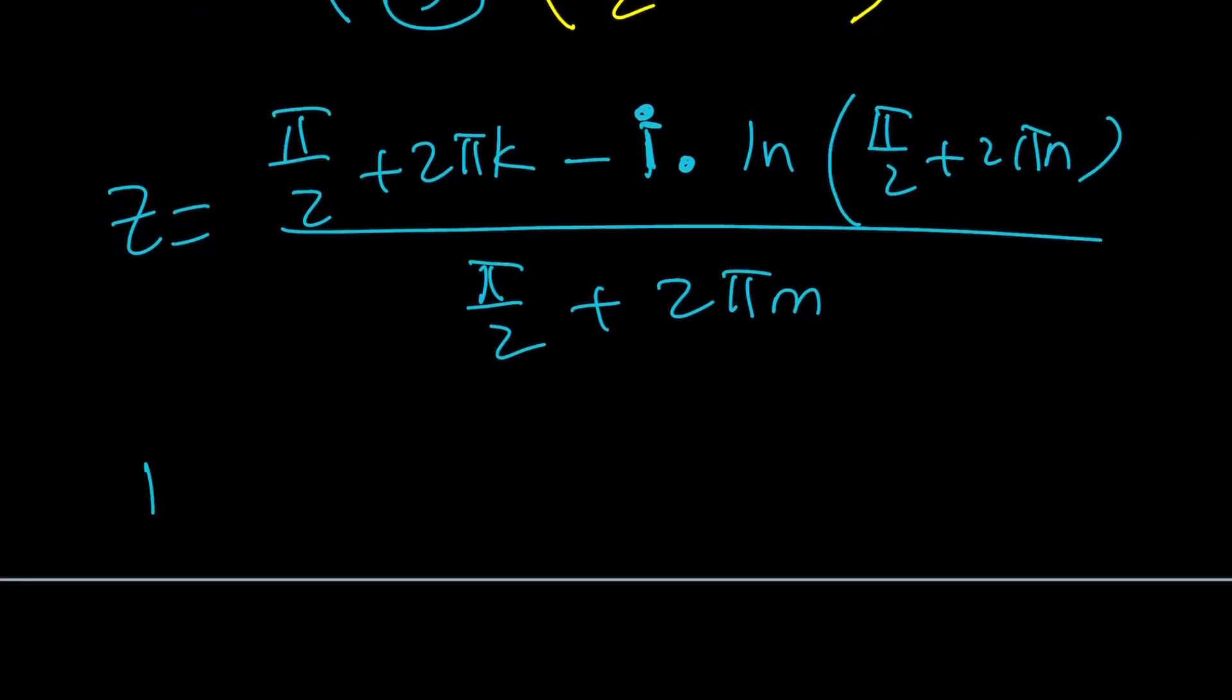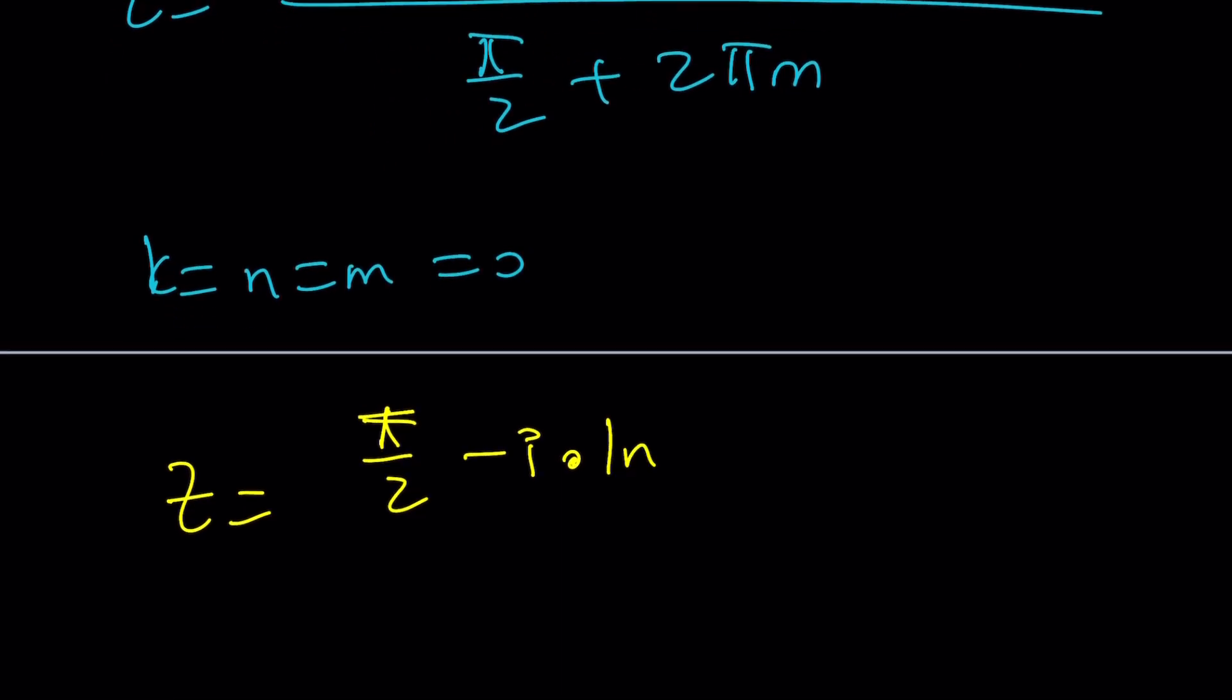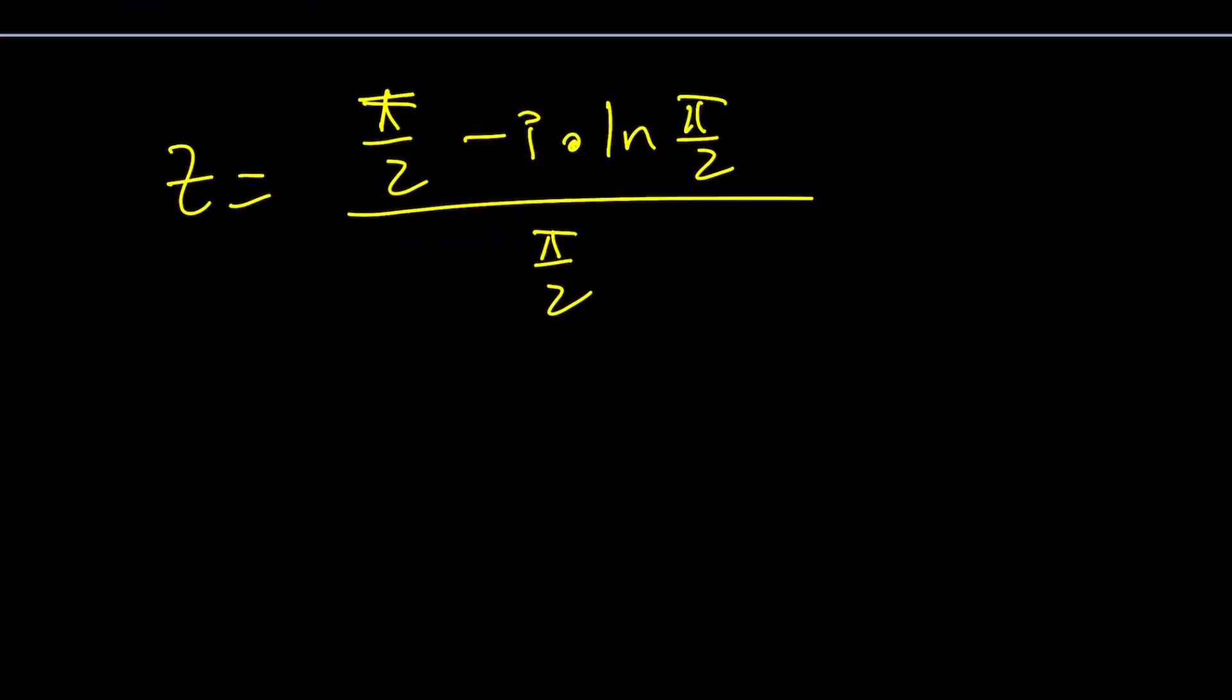If you play around with the values of m and k, you're going to find particular solutions. For example, what if they are all equal to zero? We get pi over 2 minus i times ln pi over 2 divided by pi over 2. That should be z equals 1 minus 2 ln pi over 2 over pi, multiplied by i, in the form a plus b i.